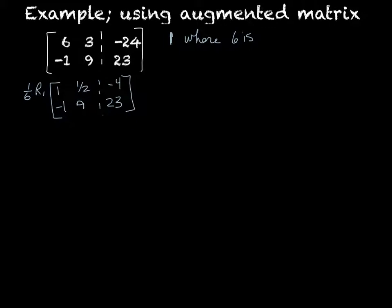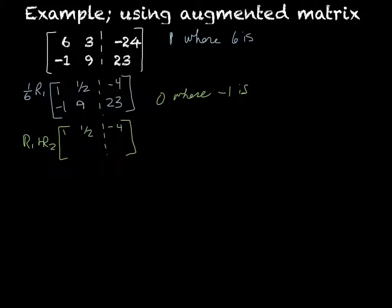Now the next thing we need to do is get a 0 where the negative 1 is. I'm going to simply add row 1 plus row 2 because that's going to cancel it out. My first row isn't going to change. My second row is going to become: 1 plus negative 1, which is 0. 1/2 plus 9, which is going to be 19/2. And negative 4 plus 23 is going to be positive 19. The next thing I need to do is get a 1 where the 19/2 is.